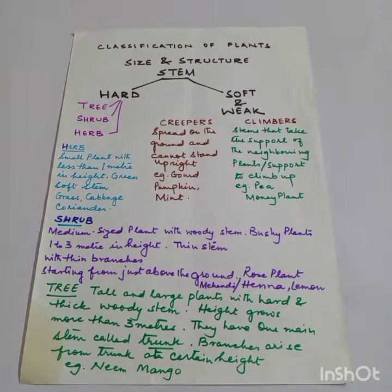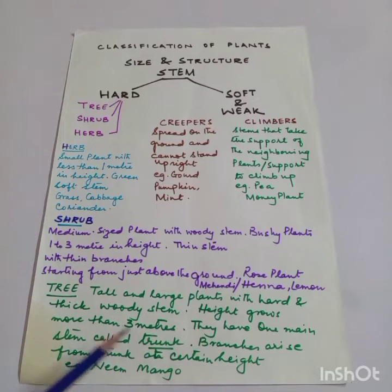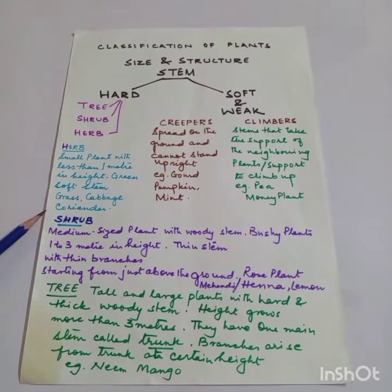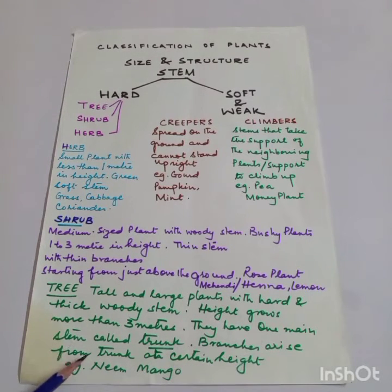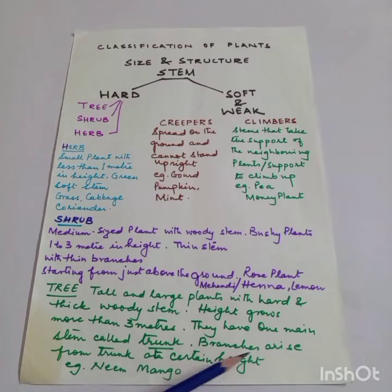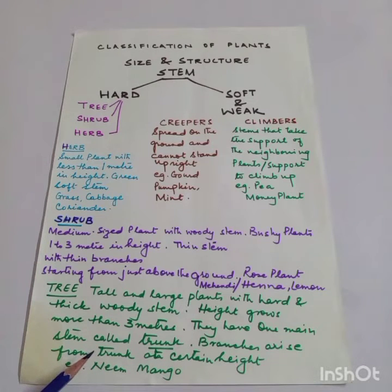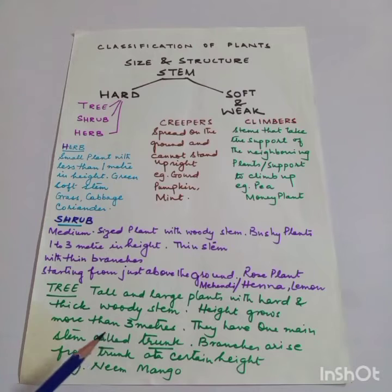Shrubs, on the other hand, start growing branches right from the ground level, which is why they are bushy plants — you may have seen these as hedges in your school garden. Trees are tall and large plants with hard and thick woody stems. Their height grows more than 3 meters. From 1 to 3 meters are shrubs; above 3 meters are trees. They have one main stem called the trunk. Branches arise from the trunk at a certain height. Examples include neem tree, mango tree, peepal tree, and banyan tree.